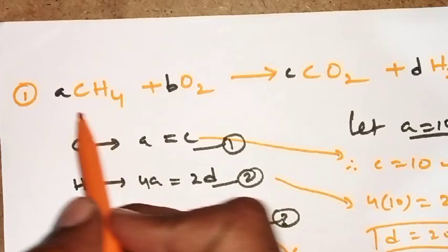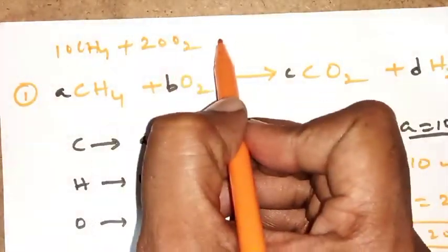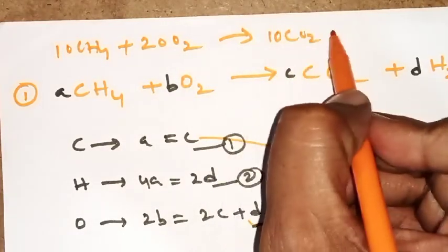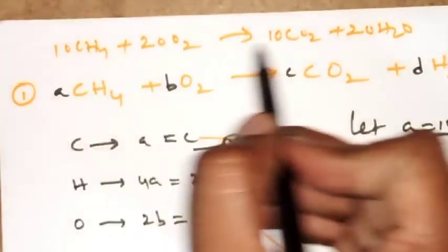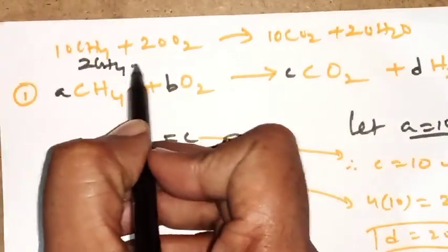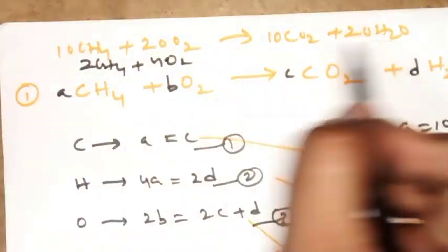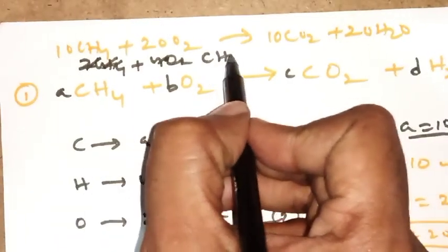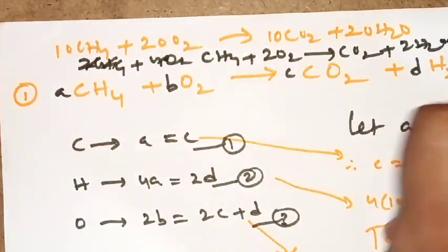Now substitute back into the skeletal equation: 10 CH₄ + 20 O₂ → 10 CO₂ + 20 H₂O. We can simplify by dividing all coefficients by 10: CH₄ + 2 O₂ → CO₂ + 2 H₂O. This is the balanced equation.